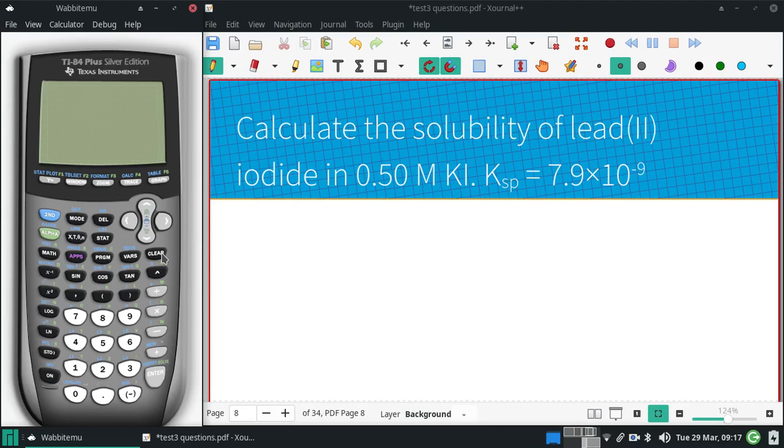All right, we want to calculate the solubility of lead(II) iodide in 0.5 molar potassium iodide, given a Ksp of 7.9 times 10 to the negative ninth.